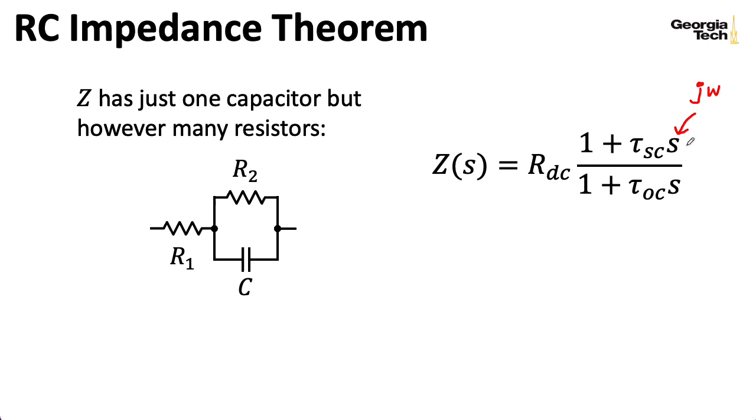Tau SC is a short circuit time constant. That's a time constant computed by taking the terminals of the network and shorting them together. TOC is the open circuit time constant, computed leaving those terminals open. To compute the time constants, you imagine taking wire cutters and snipping out the capacitor and replacing it with an ohmmeter to measure the resistance seen looking out of the terminals where the capacitor was.